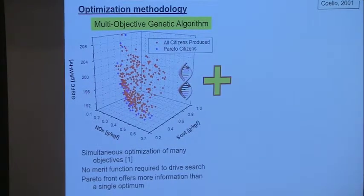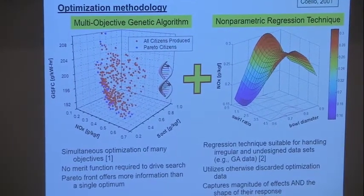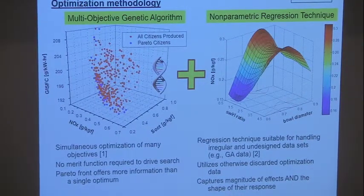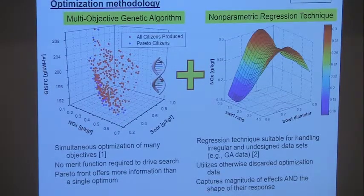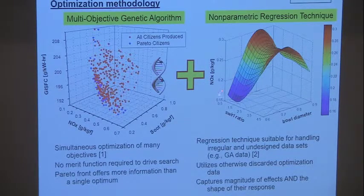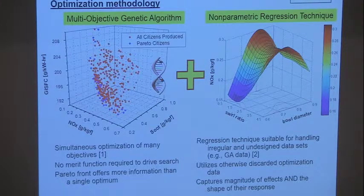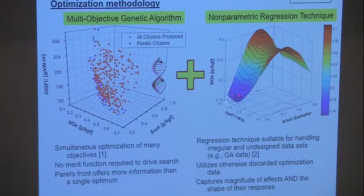We combine that with a regression technique that uses all of these calculations to create more information than just what a range of optima would look like. For instance, regression applied to all of this data might give you nitric oxide as a function of input parameters such as swirl ratio or bowl diameter. We see that small bowl diameters give low NOx, and using this we can extract more information than just what the Pareto optimum provides.